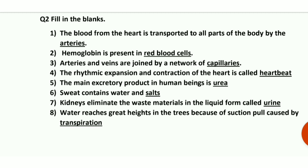Fourth: the rhythmic expansion and contraction of the heart is called heartbeat. Our heart contracts and relaxes rhythmically — this rhythmic expansion and contraction generates the heartbeat. Fifth: the main excretory product in human beings is urea — urea is the main excretory product. Sixth: sweat contains water and salts — our sweat contains water and salt.